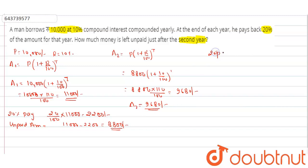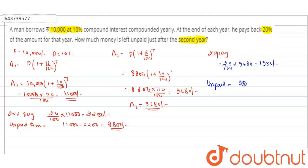20 percent is paid: 20 percent of 9,680 rupees = 1,936 rupees. So the unpaid amount after the second year is 9,680 − 1,936 = 7,744 rupees.